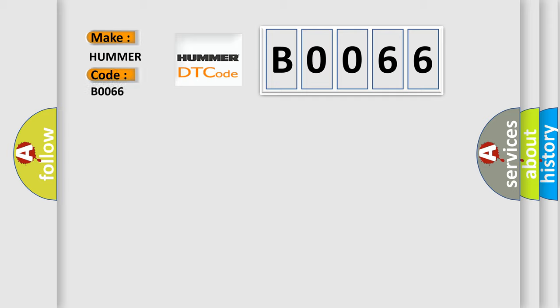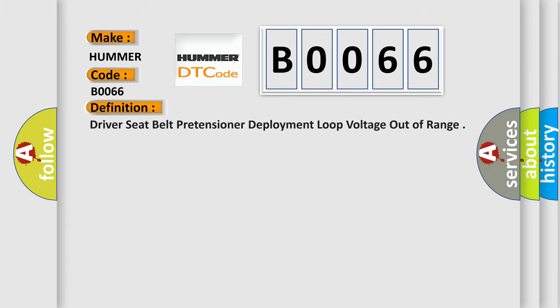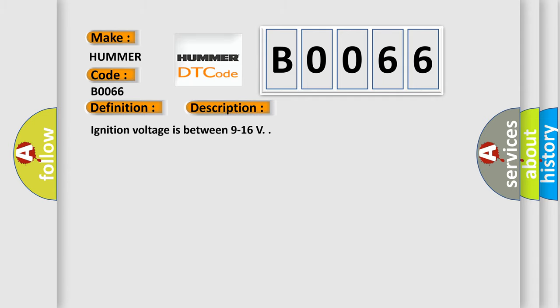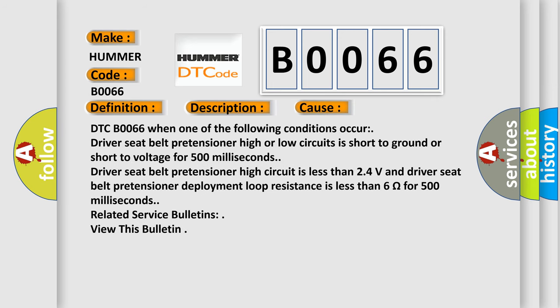For Hummer car manufacturers, the basic definition of B0066 is: Driver seat belt pretensioner deployment loop voltage out of range. This diagnostic error occurs most often when one of the following conditions occur: the driver seat belt pretensioner high or low circuit is short to ground or short to voltage for 500 milliseconds.